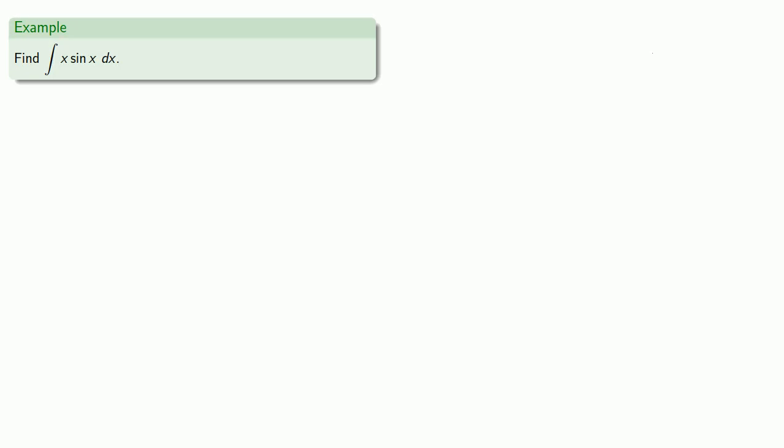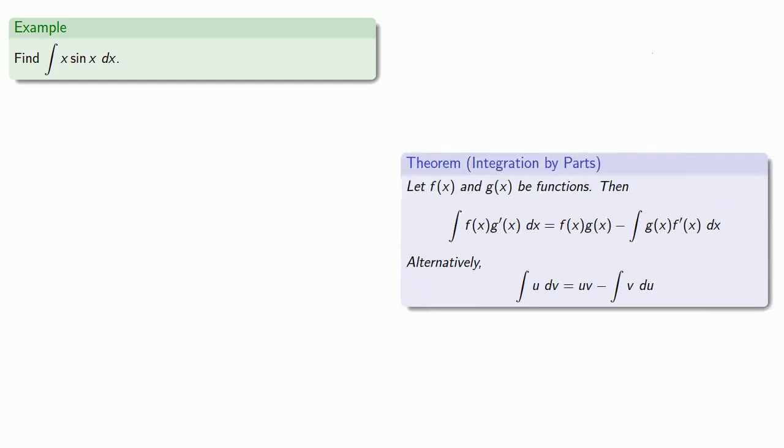Let's take a look at the integral of x sin x. If we want to use integration by parts, we have to view this as a product of two things, one of which will be f(x) and the other will be g'(x). We'll try: f(x) = x and g'(x) = sin x.